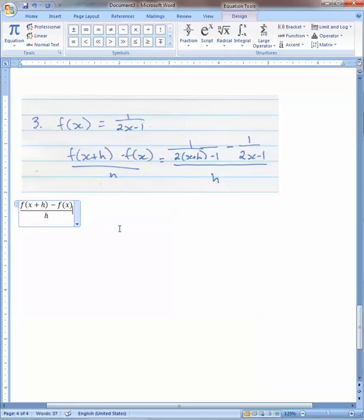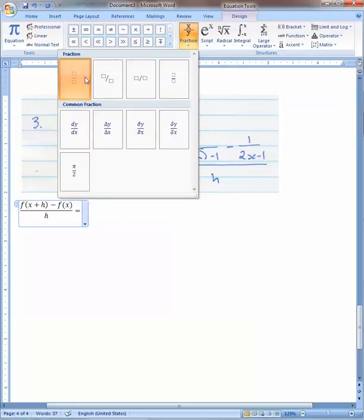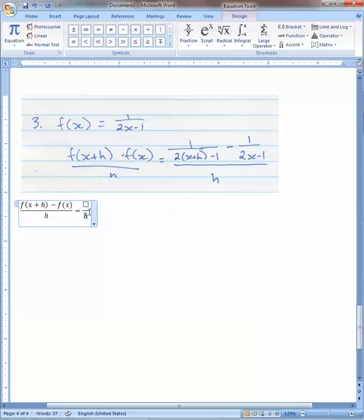Click over here so I can get the equal sign in the right place. Now, we look at the overall picture, which is a fraction. On the bottom we have h. On the top we have two more fractions.